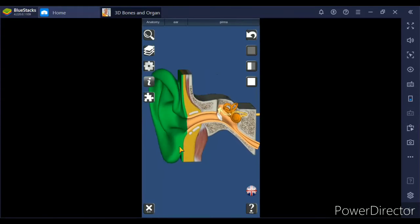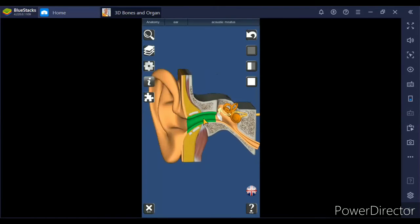Second is auditory canal. It is a little bit curved tube which conveys collected sound waves up to the tympanum. And it also secretes ear wax. The function is it prevents the entry of foreign particles and as well as it lubricates the ear drum.